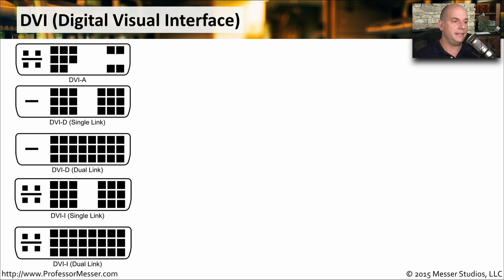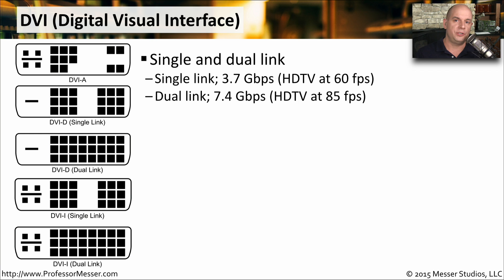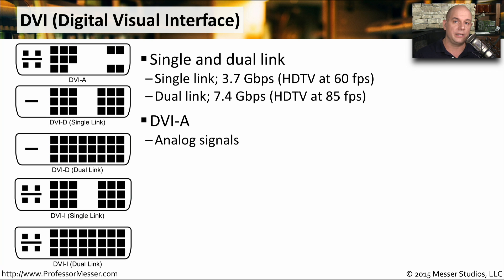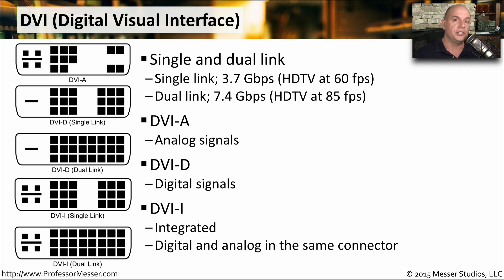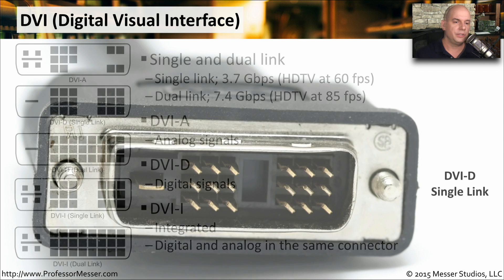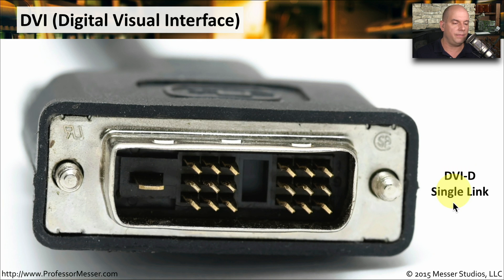A third common video connector is DVI — Digital Visual Interface. It comes in single link and dual link versions. Single link supports 3.7 gigabits per second, enough for an HD signal at 60 frames per second. Dual link supports 7.4 gigabits per second for higher resolutions or faster frame rates. DVI can send analog, digital, or a combination of both signals. A DVI-D single link interface sends digital signals to a single output and is commonly used for a single monitor at standard HD resolutions.